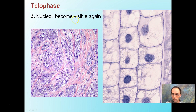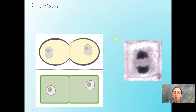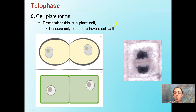During telophase, nucleoli become visible again — the nucleus within the nucleus, typically a darker region. Many spindle fibers begin to break apart since they're no longer needed at this phase. Lastly, if we're talking about plant cells, the cell plate will form, because plant cells have a cell wall. The cell plate forms and ultimately joins up to form a cell wall between the two newly formed identical cells.